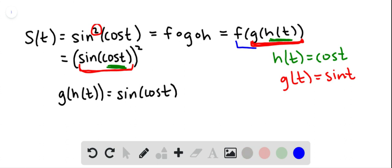Finally, we want the outermost layer f. So the outermost function is the squaring function. So let's let f of t equal t squared